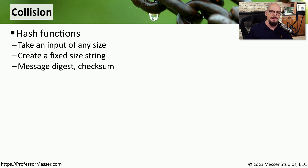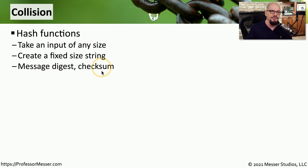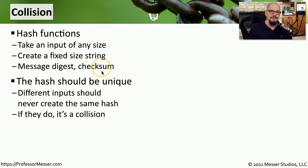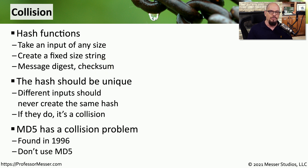The only time we should see an identical hashing value is if the input values were identical. With a hash, we're taking an input of any size and any type of file and creating a fixed-size string — which we call a message digest, a checksum, or a fingerprint. Each hash value should be unique for a unique input, and we should never have a hash appear that's identical to another if different inputs are involved.